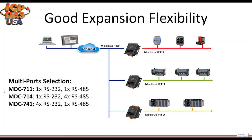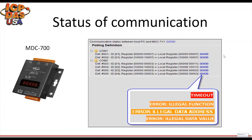As shown in the comparison table, we now have three different Modbus Data Concentrators with different numbers of ports to choose from in order to match your application. The MDC 711 has one RS-232 port and one RS-485 port. The MDC 714 has one RS-232 port and four RS-485 ports. And the MDC 741 has four RS-485 ports. Depending on what application you have, you can choose from those Modbus Data Concentrators.